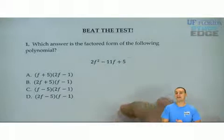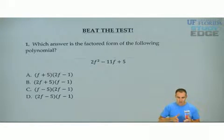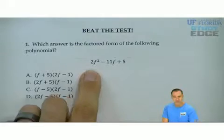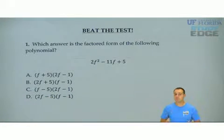I've got two questions to beat that test. The first one is, which answer is the factored form of the following polynomial? So in this case, ready? I can't factor anything out, so I'm going to go ahead and factor this trinomial with the coefficient in front. What's the first step?